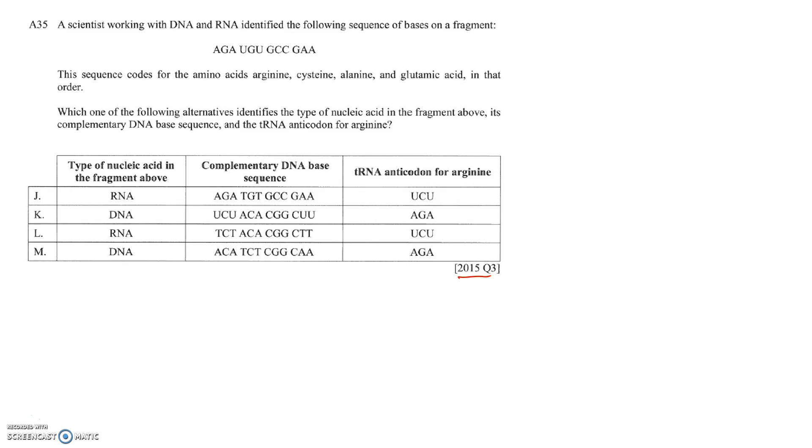We do know that it codes for the amino acids arginine, cysteine, alanine, and glutamic acid in that order. The question is asking us to work out the type of nucleic acid, the complementary DNA sequence, and the anticodon that matches that fragment. Then we've got our four options here to choose from.